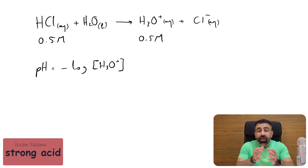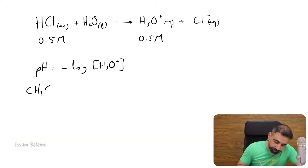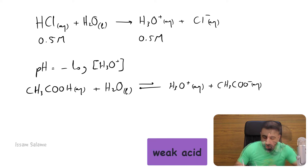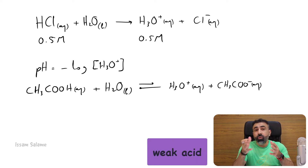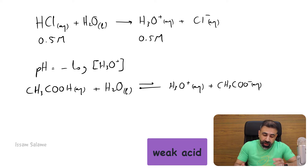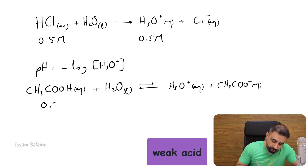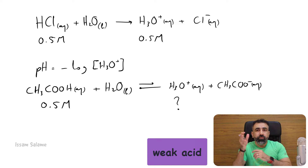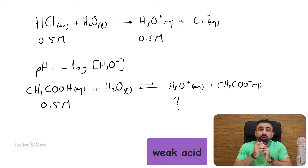But in the case of weak acids, they dissociate partially. Acetic acid is a weak acid, so it dissociates partially. If we have 0.5 molar of acetic acid, we are not going to have 0.5 molar of hydronium ions. The concentration of the hydronium ions is going to be much less than the concentration of the acetic acid.